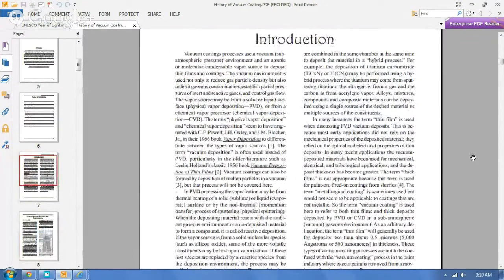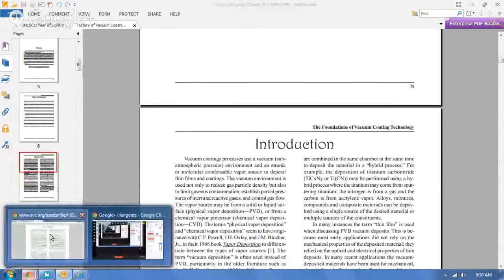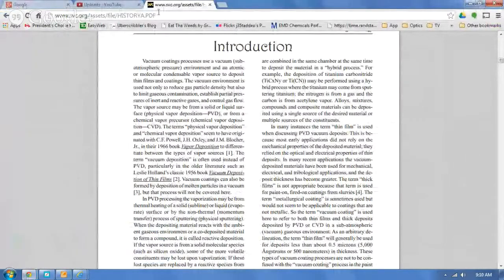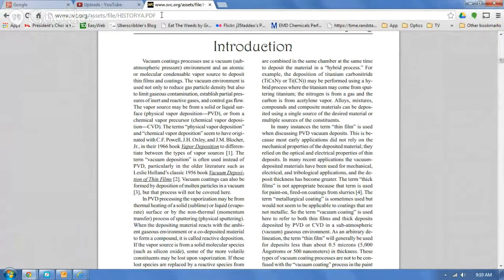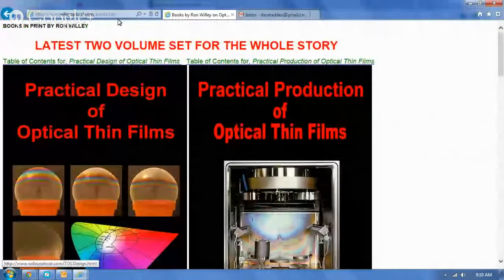So take a look at that. It's a great document. You can find this document here at svc.org slash assets slash file slash history a dot pdf. I'll just leave that there for a moment for you to get that down if you like. And if you want to, you can find Ron Willy at willieoptical, w-i-l-l-e-y optical dot com.